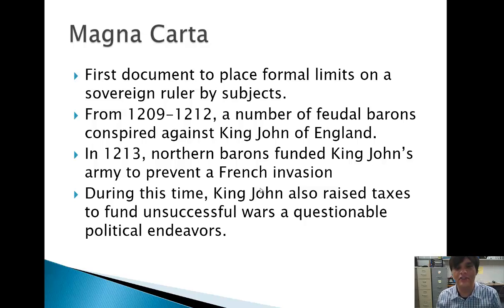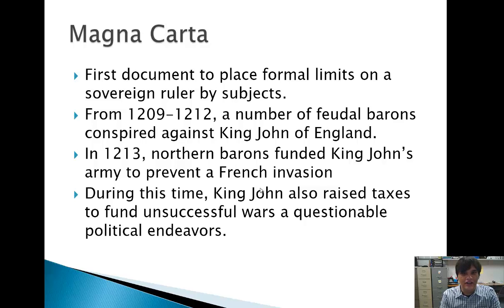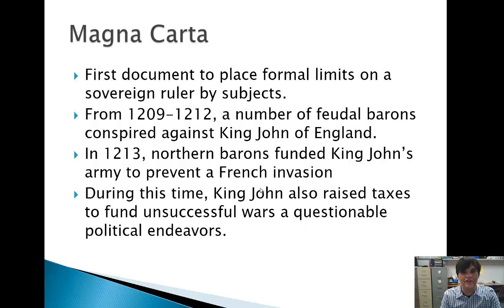Even before the Age of Enlightenment we were thinking about placing limits on government through the Magna Carta. The Magna Carta is the very first written charter that actually placed formal limits on a sovereign ruler by his subjects. Before the Magna Carta, many kings and rulers didn't really have any limits on their power at all — they were free to do whatever they wanted and whatever they said was the rule of law. The Magna Carta was the very first written charter to place limits on a sovereign ruler, specifically King John of England, and this happened back in the 13th century from 1209 up until 1215.